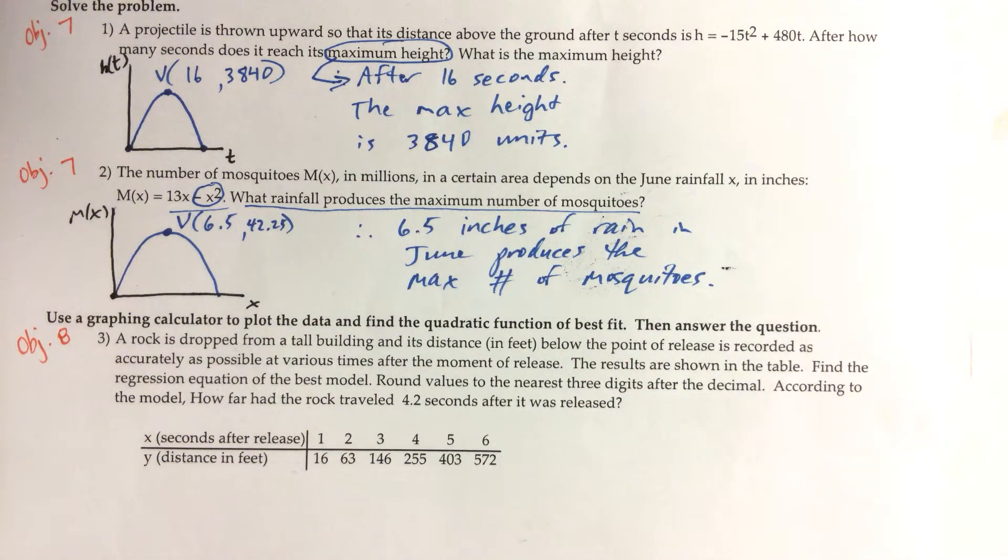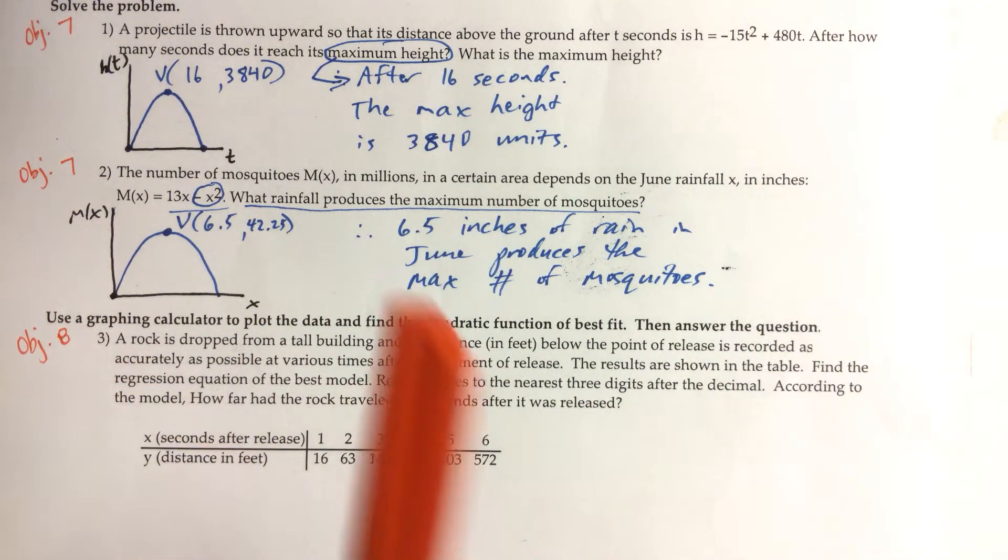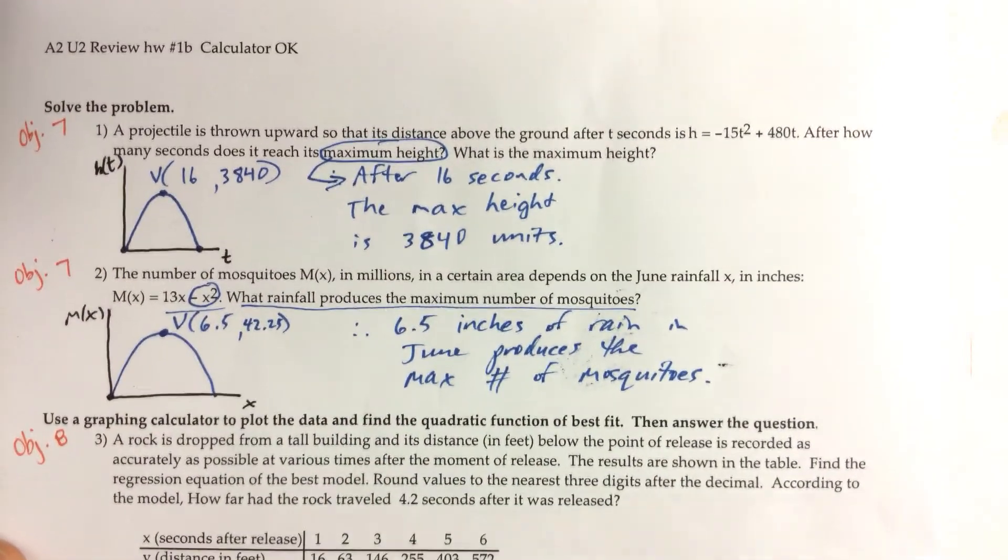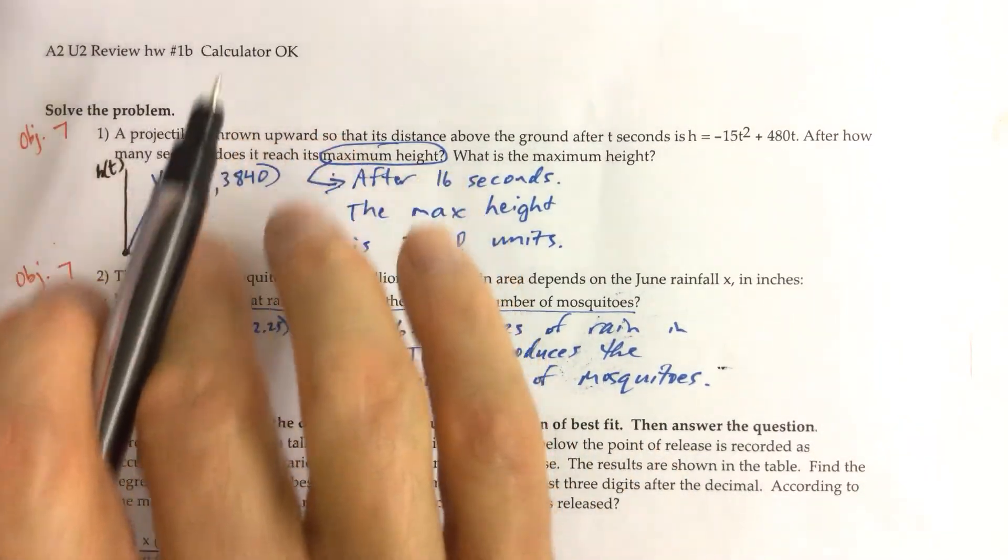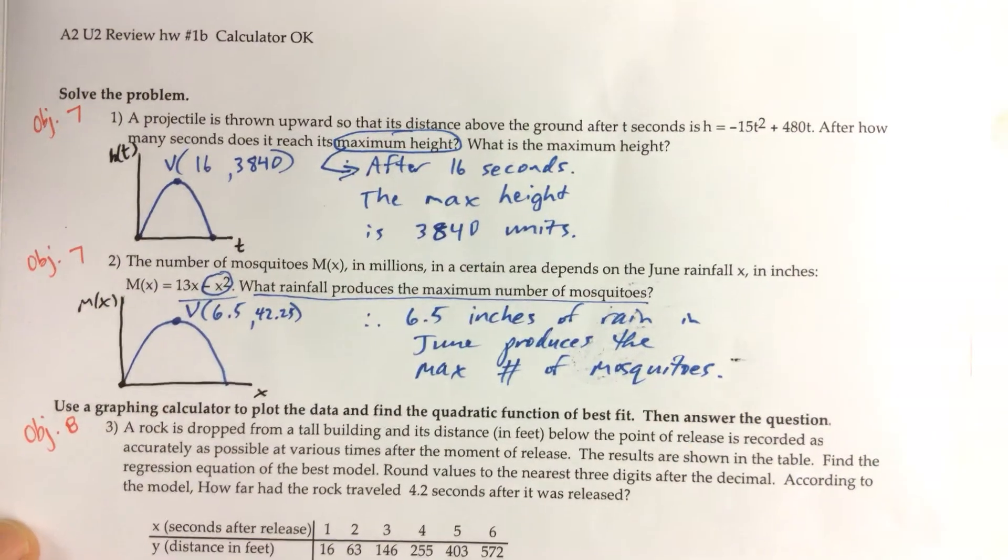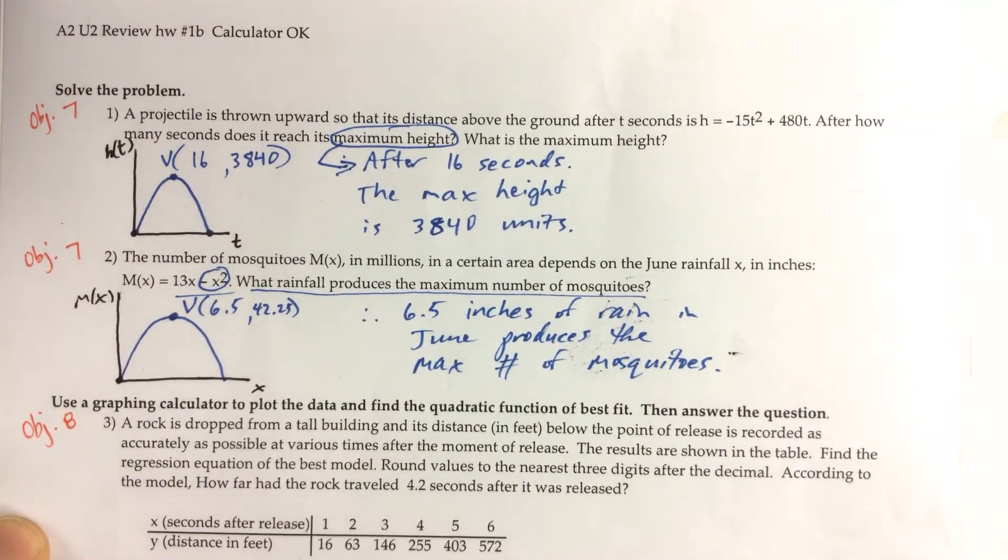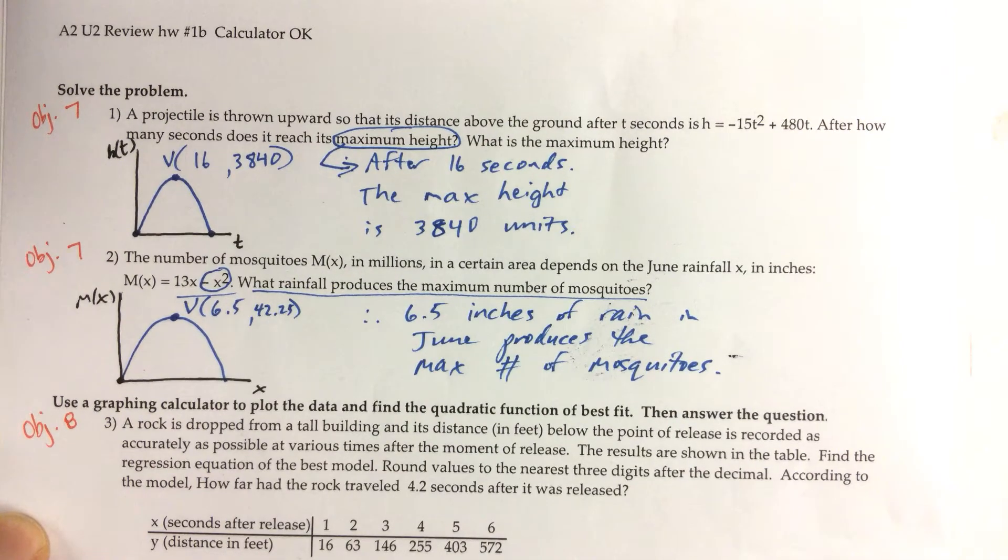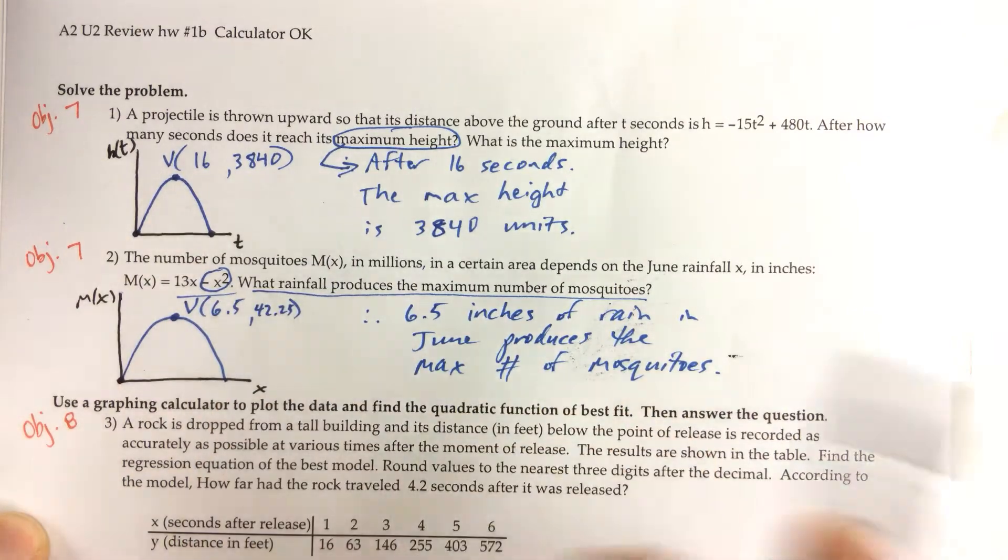I should point out that before I do problem number three here on homework 1b, the first two problems are examples of what you need to be able to do. Objective seven in unit two is to model real-life situations with quadratic functions, and that's what we did there.